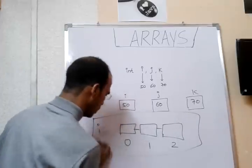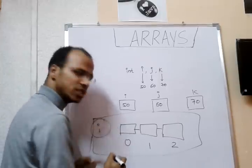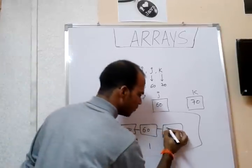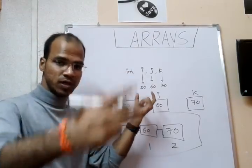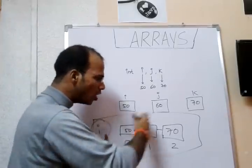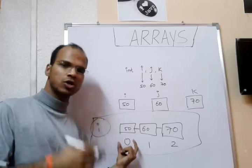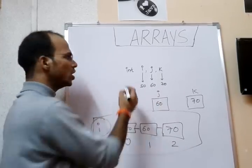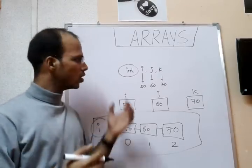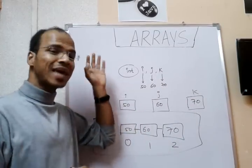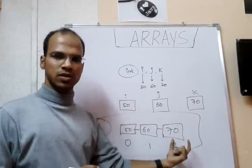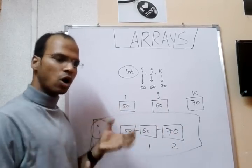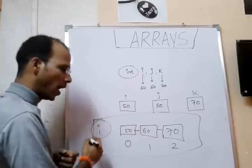The whole train is called 'i'. Bogey 0 saves 50, bogey 1 saves 60, bogey 2 saves 70. Instead of three different variables, we now have just one variable 'i' that can store all three values using different index numbers. Arrays are nothing but a collection of elements — the only condition is the elements must be of similar type: int throughout, float throughout, or char throughout.